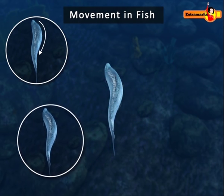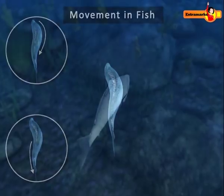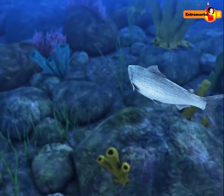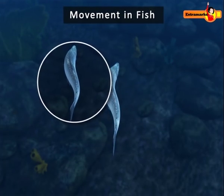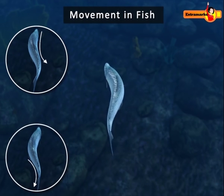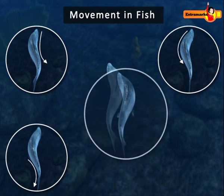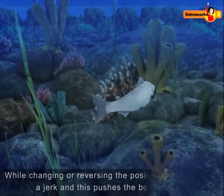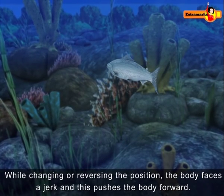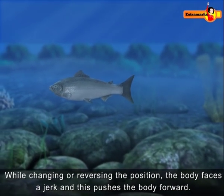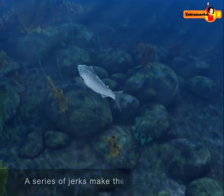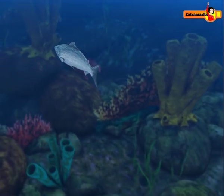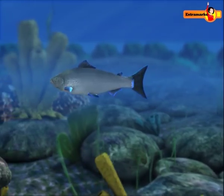Simultaneously, the tail part of the body swings to the opposite side. This position is then reversed — the front and tail parts of the body curve to the opposite side. While changing or reversing position, the body faces a jerk, and this pushes the body forward. A series of jerks makes the fish swim ahead, forming curves in the fish body.